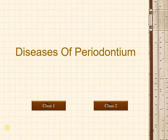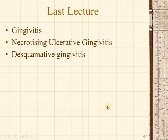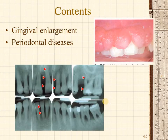Hello everyone, welcome to the continuation of the diseases of periodontia. In the last class, we spoke about gingivitis, necrotizing ulcerative gingivitis and desquamative gingivitis. In today's class, we will continue talking about the various gingival diseases which show gingival enlargement and the etiology, pathogenesis, and types of periodontal diseases.